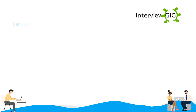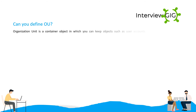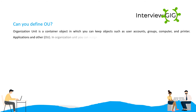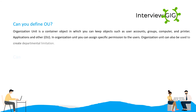Can you define OU? Organizational Unit is a container object in which you can keep objects such as user accounts, groups, computers, and printer applications and other OUs. In an Organizational Unit you can assign specific permissions to the users. Organizational Units can also be used to create departmental limitations.